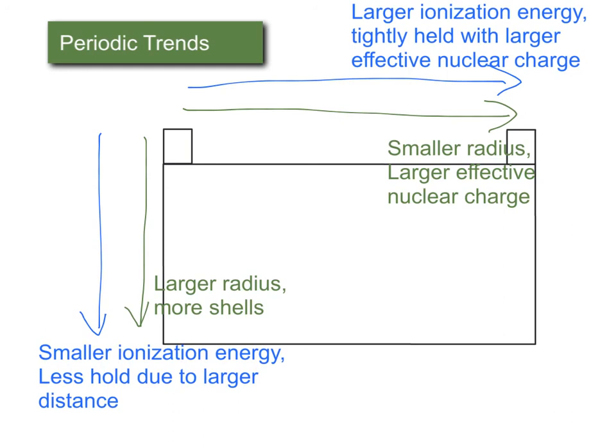That wraps up our discussion of periodic trends. You should be able to explain these trends in terms of the number of shells and the effective nuclear charge.